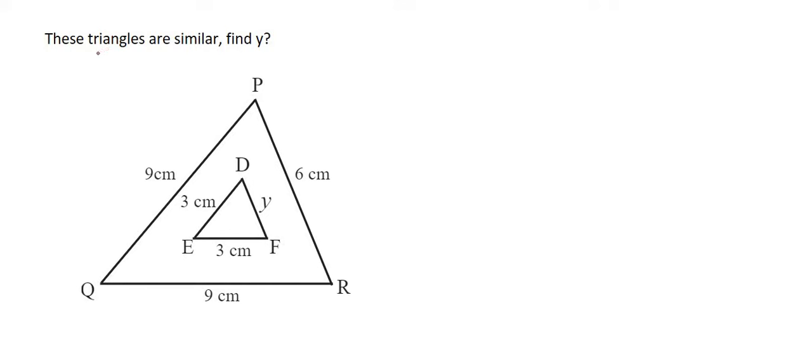So they tell us here that these two triangles are similar. We can see that PQ goes with DE, EF goes with QR, and DF goes with PR. So my advice to you would always be to do the following: just write out the order.